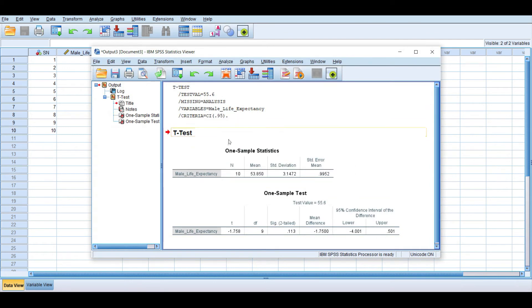Now once you click okay, this result appears. The first table here is the descriptive statistics. The N here simply shows the total number of observations. The mean here is the mean of the sampled observation, that is the mean of the sample observations. We have the standard deviation which is 3.1472 and the standard error which is 0.9952.